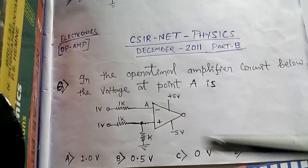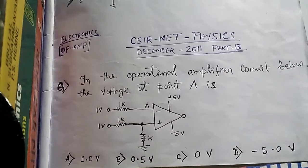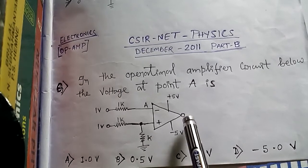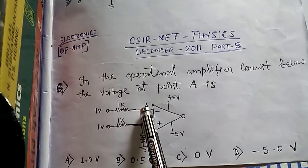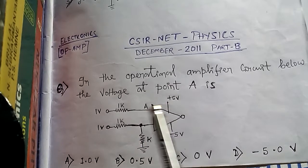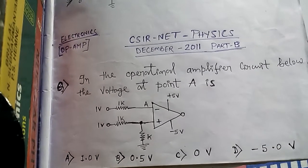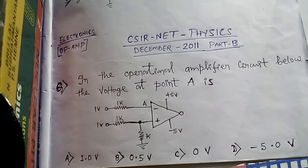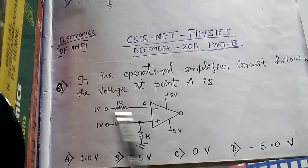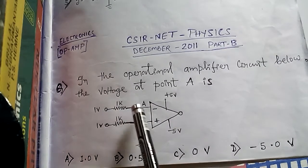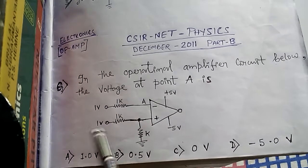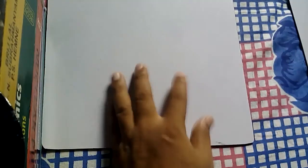The voltage at point A — since it is an open loop condition, meaning there is no feedback circuit, the voltage at point A is the same as the voltage given, so it is also one volt. This is the trick we discussed in our last two consecutive videos: whenever it is open loop condition with no feedback circuit going from output to input, the voltage we provide equals the voltage at the terminal. So it is also one volt, and the answer is A.